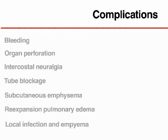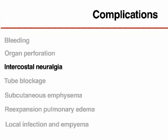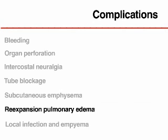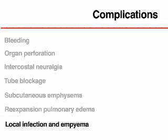Complications associated with chest tube insertion include bleeding and hemothorax; traumatic perforation of the lung, heart chambers, diaphragm, or intra-abdominal organs; intercostal neuralgia due to trauma of the intercostal neurovascular bundle; intermittent blocking of the tube with clot or debris; subcutaneous emphysema; re-expansion pulmonary edema due to more than 1 to 1.5 liters of fluid drainage in less than 30 minutes; infection of the drain site; and empyema.